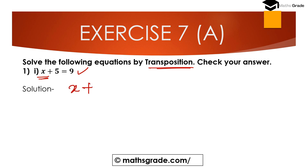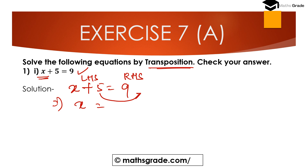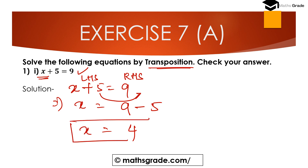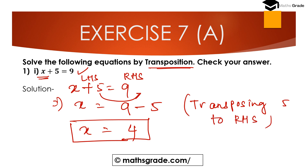We are given x plus 5 equals 9. Transposing 5 from the left-hand side to the right-hand side, the plus operation changes to minus. So x equals 9 minus 5, which is 4. The solution of this equation is x equal to 4.